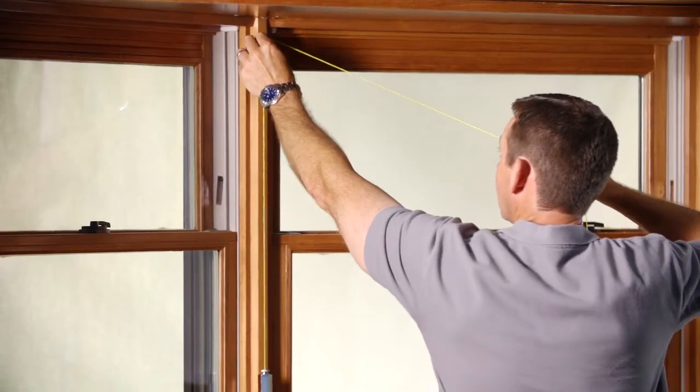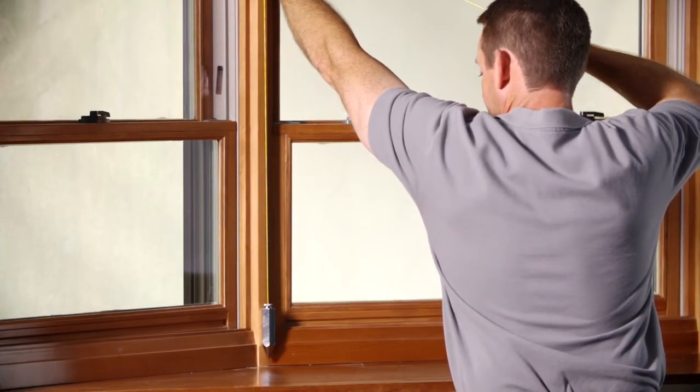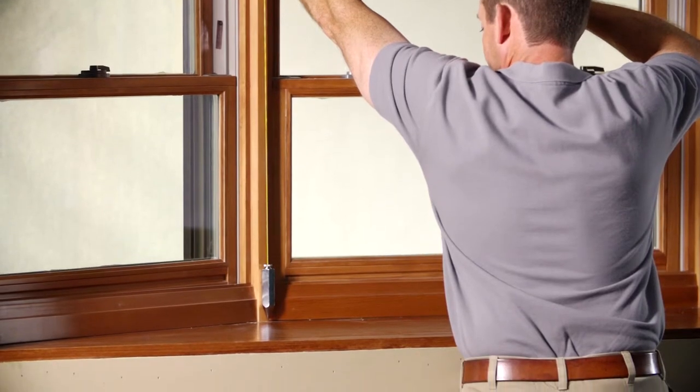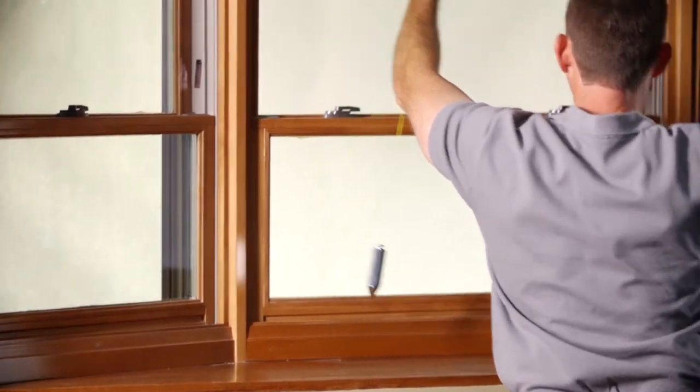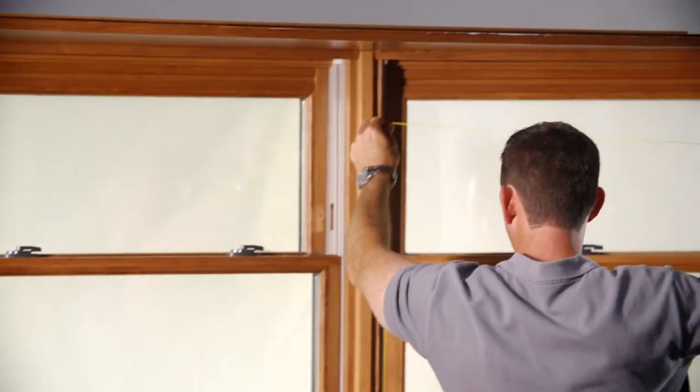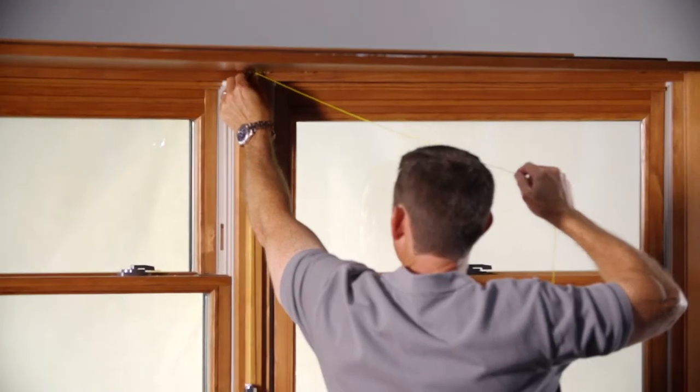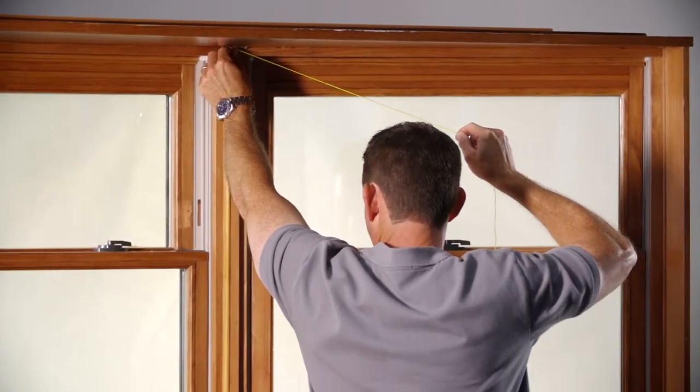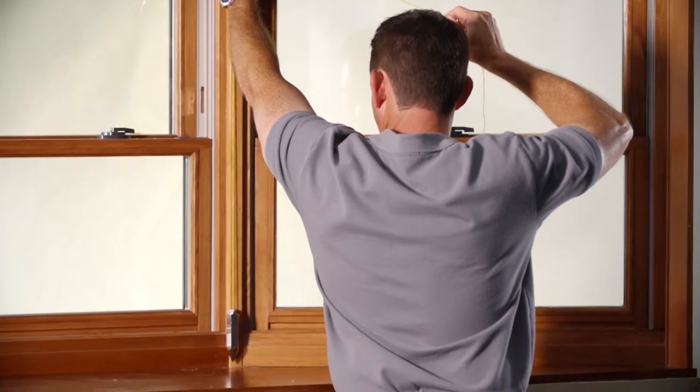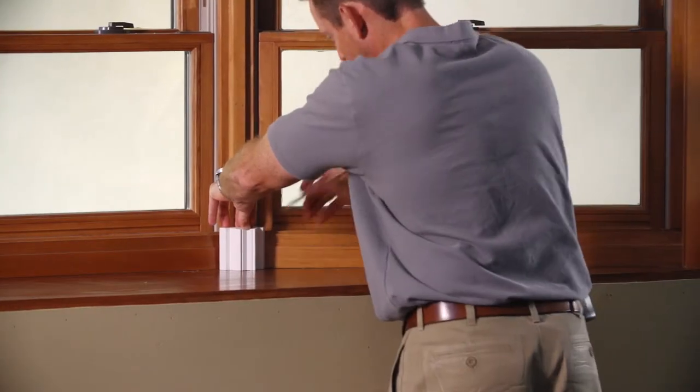Point number two: Use a plumb bob when positioning your bay post sample or template during the measure. This will ensure your ability to install the bay post perfectly plumb at the time of installation and achieve proper fit. Point number three.